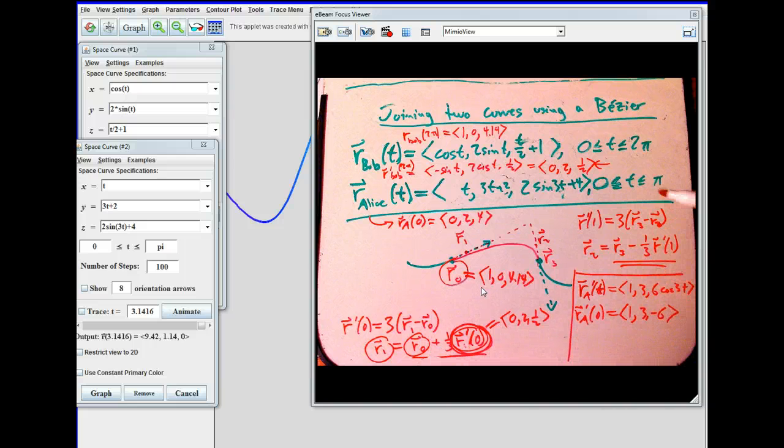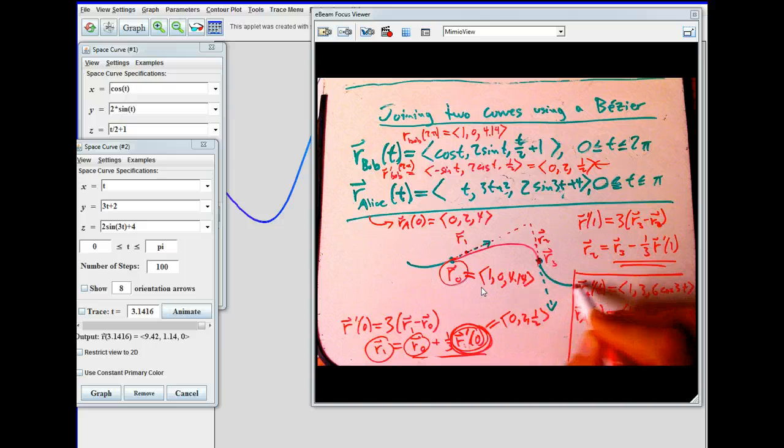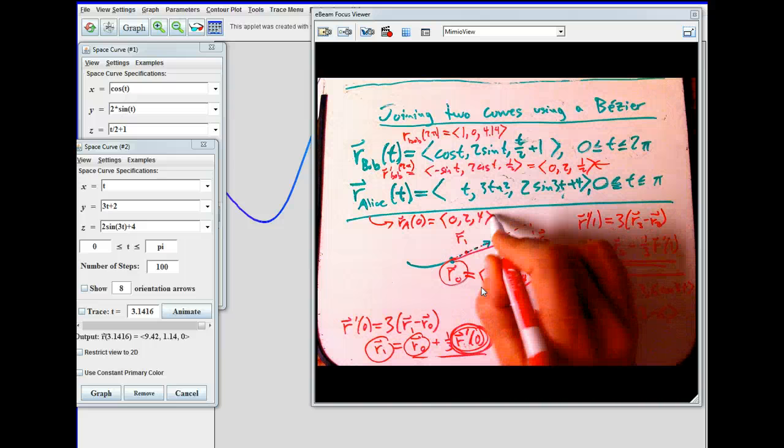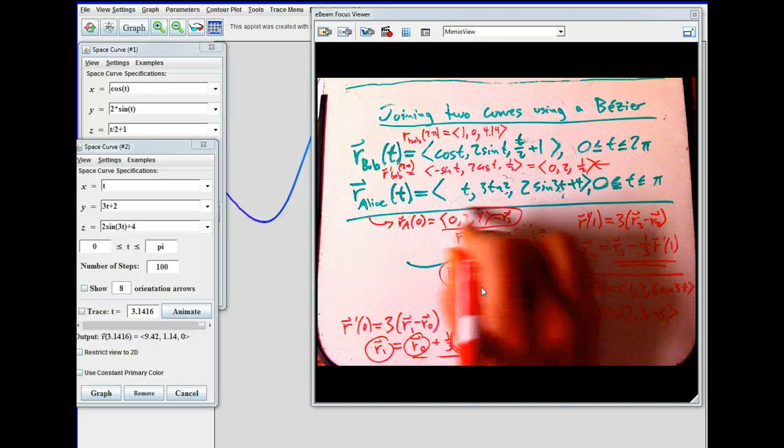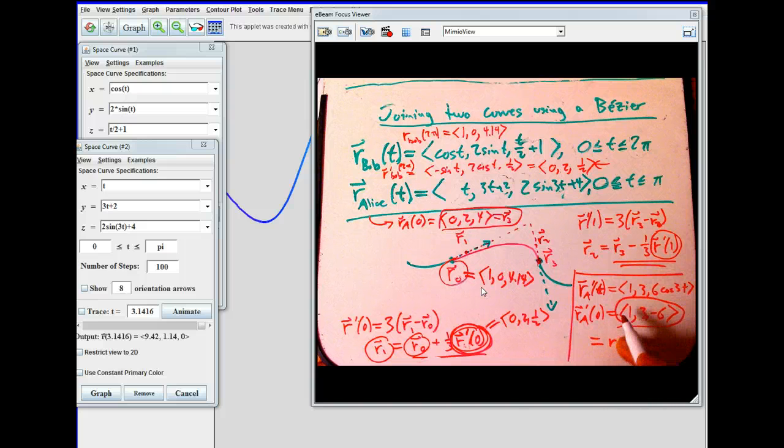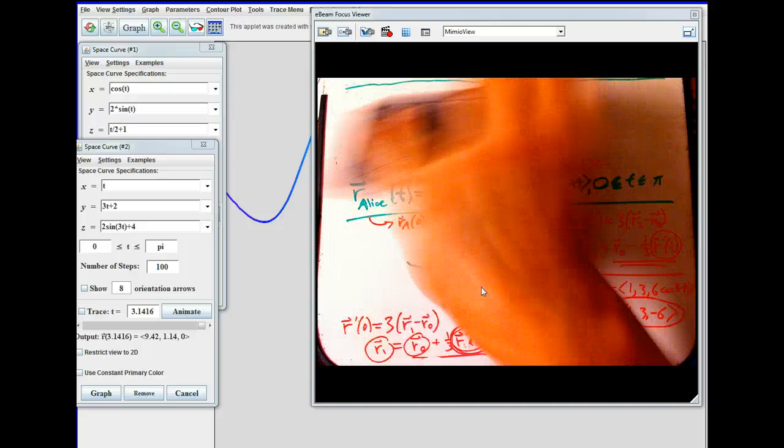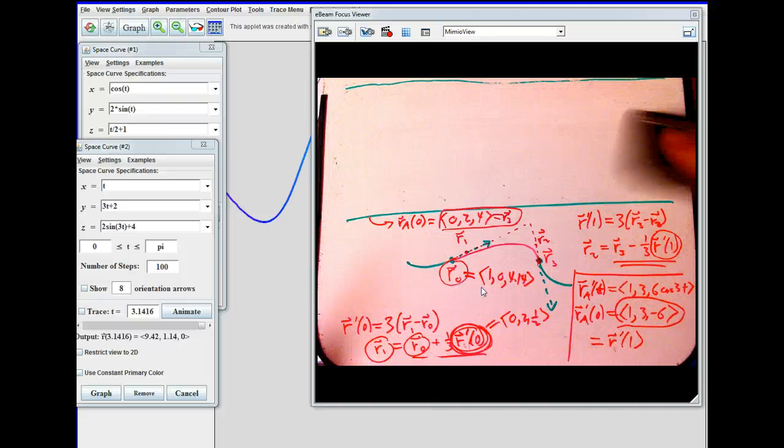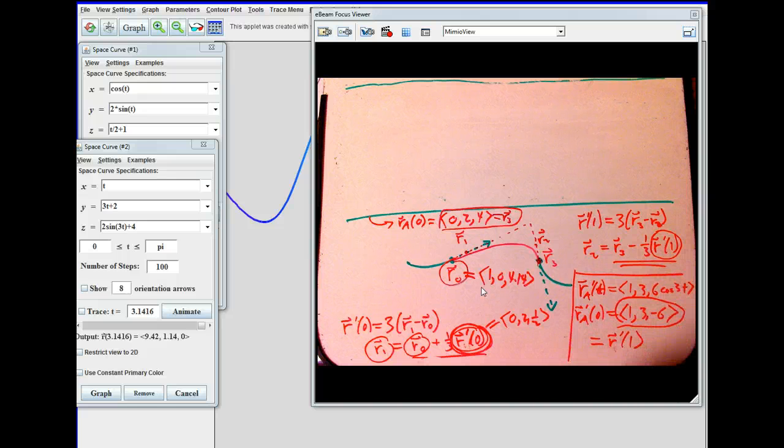Over here, R three, that's the start of Alice's curve, the end of the Bezier. That's going to be this guy. And then R two we're going to get from this information. We need the velocity that's going to end up the Bezier. But that is Alice's starting velocity. So that's going to be R prime of one for the Bezier.